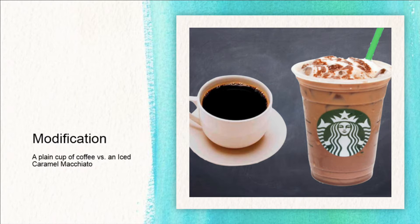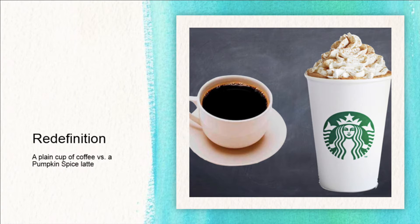Now we look at modification. With modification, we are going from a cup of coffee at home to an iced caramel macchiato. The drink has been modified and is now made with espresso instead of coffee, and contains syrups and flavors only available at Starbucks. To recreate it at home would be possible, but it would be much easier to have it made at Starbucks. The last step is redefinition. We go from a plain cup of coffee at home to a pumpkin spice latte. In this drink, the coffee has been completely redefined — only Starbucks can make it this way. They have even trademarked the recipe. It's something you can't recreate at home, and something you can't get anywhere else.